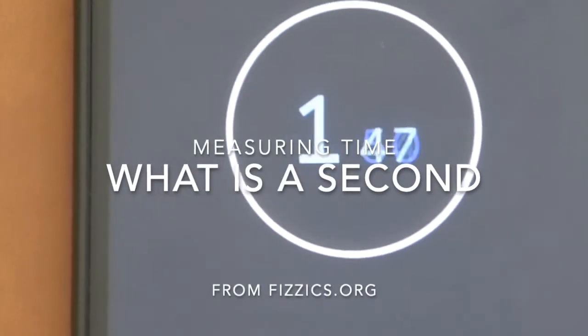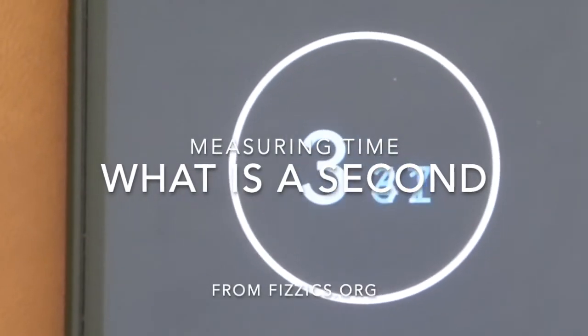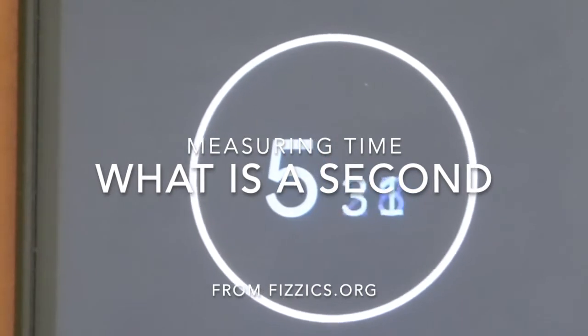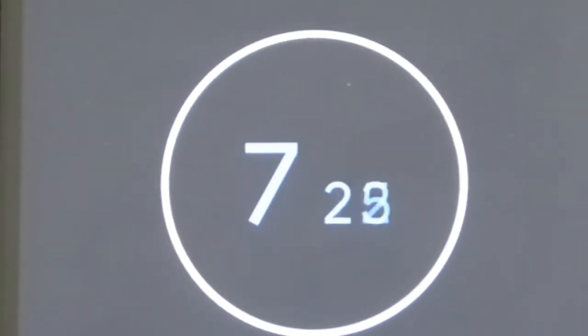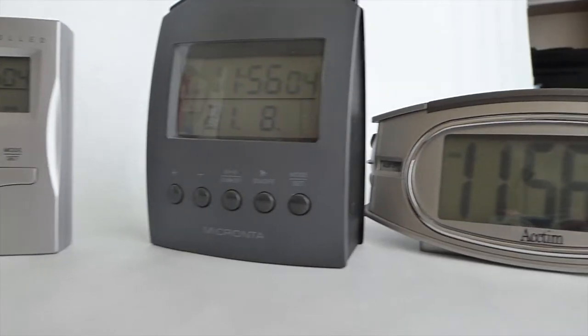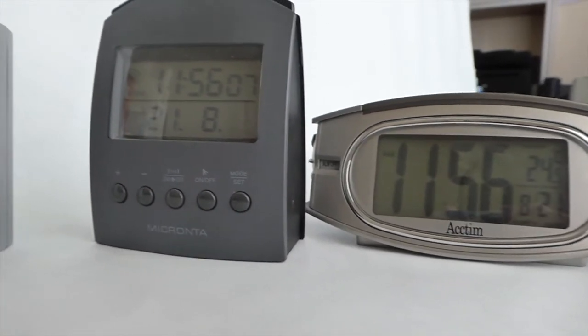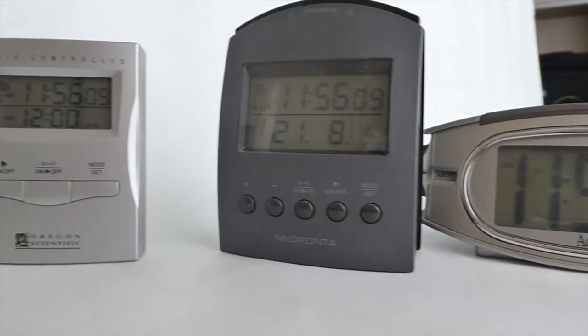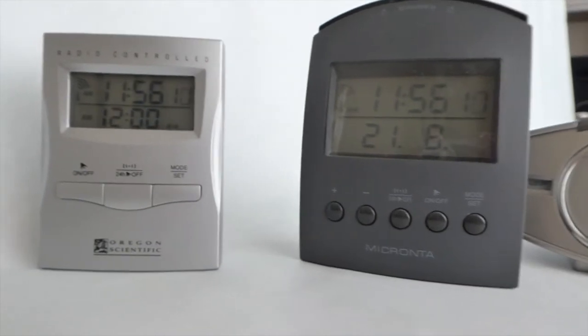At any sports meeting we take it for granted that we can measure the time of a race very accurately, probably to a hundredth of a second. We also take it for granted that clocks are very precise, particularly these here that are synchronized by a radio signal to an atomic clock.